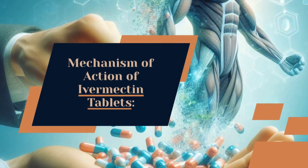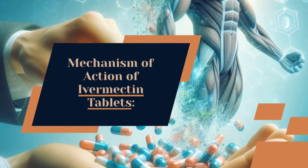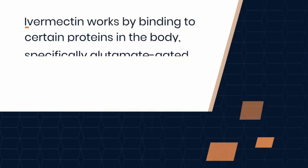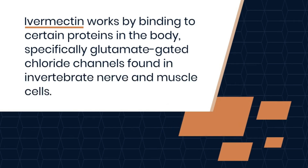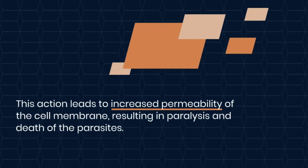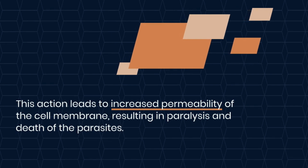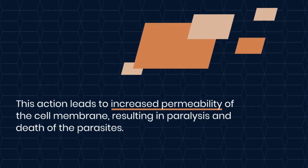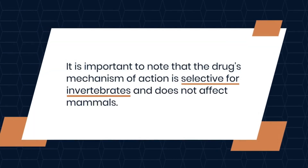Next, the mechanism of action of ivermectin tablets. Ivermectin works by binding to certain proteins in the body, specifically glutamate-gated chloride channels found in invertebrate nerve and muscle cells. This action leads to increased permeability of the cell membrane, resulting in paralysis and death of the parasites. It is important to note that the drug's mechanism of action is selective for invertebrates and does not affect mammals.